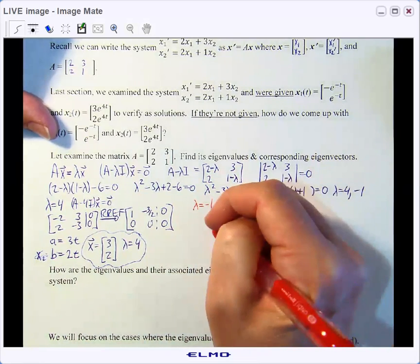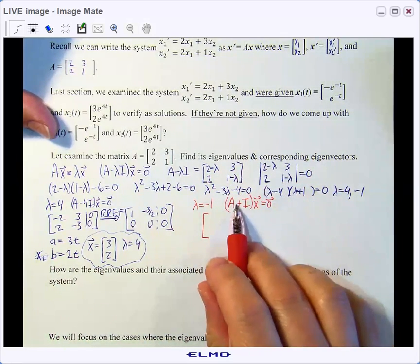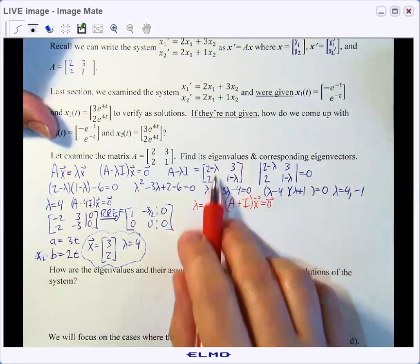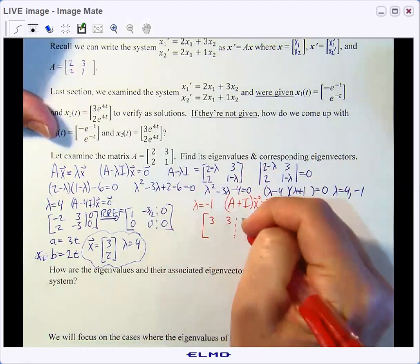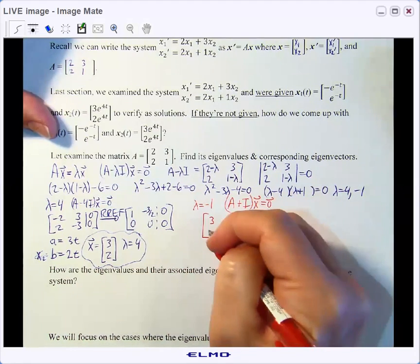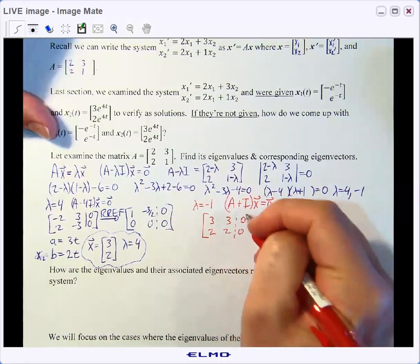So we're going to end up with the system putting in a negative 1 where lambda is. 2 minus a negative 1 is 3, 3, 0, 2, 2, 0.